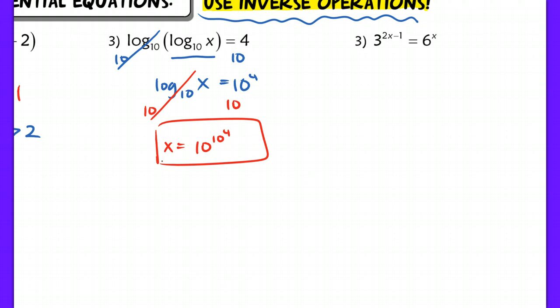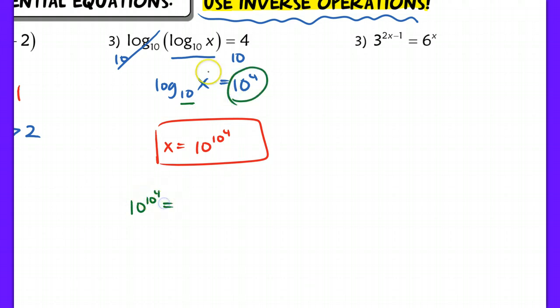Just in case you're confused, you can always double-check this by using the definition of a log. If I use the definition, I have a base of 10, so 10 to this exponent — 10 to the fourth — has to equal my argument, which is x. That's exactly the same answer. If you need to double-check using the definition of a log, go ahead, but really, using inverse operations is the best bet for solving any of these problems.